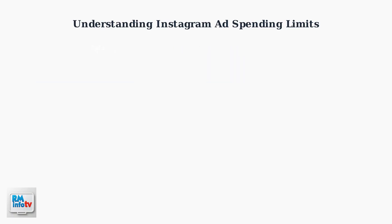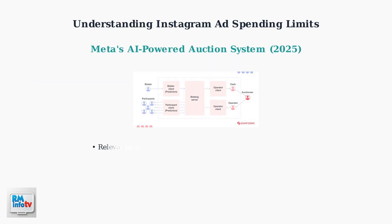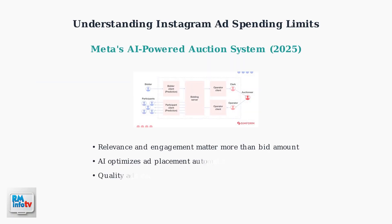As of 2025, Instagram uses Meta's advanced AI-powered auction system. This system prioritizes ad relevance and engagement over pure bid amounts, meaning the most relevant ad wins placement, not necessarily the highest bidder.